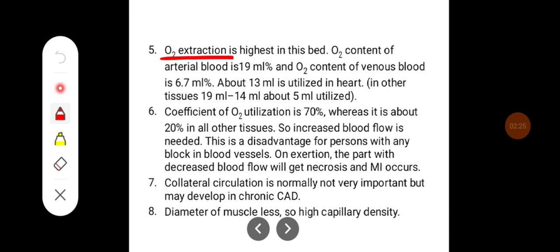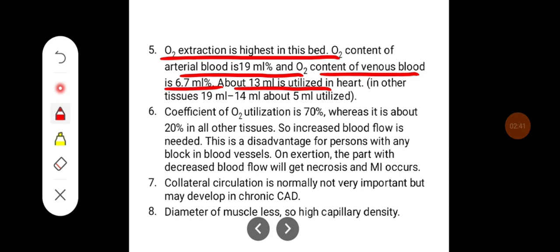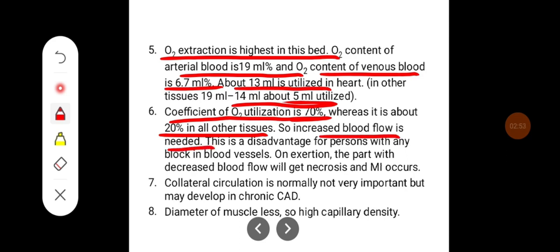Oxygen extraction is highest in this vascular bed. Oxygen content of the arterial blood is around 19 ml percent and oxygen content of venous blood from the heart is 6.7 ml percent, meaning about 13 ml is utilized by the heart compared to just 5 ml in other tissues. The coefficient of oxygen utilization is almost 70%, whereas it is about 20% in all other tissues. Therefore, increased blood flow is needed.